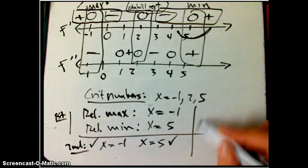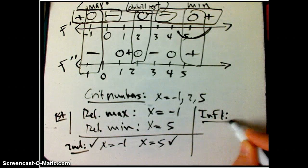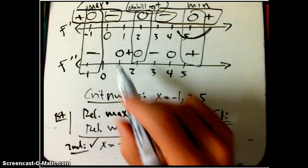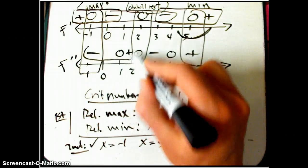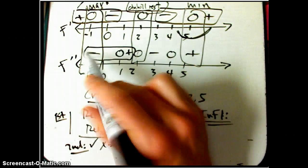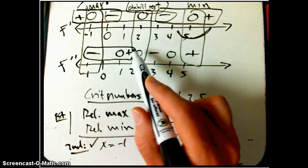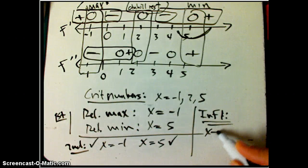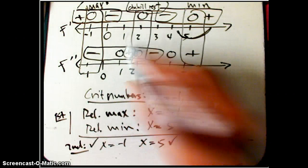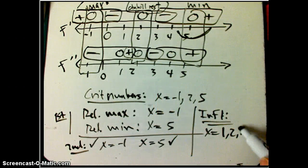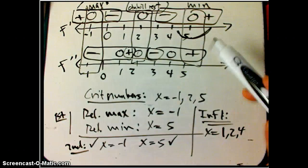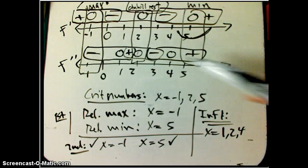And then what about inflection points? Those are going to be sign changes for the second derivative. Minus zero plus. Remember, don't just look for zeros. Look for a sign change. Minus zero plus, yep. So we're going to get x equals one. And plus zero minus, yep. X equals two. And minus zero plus, x equals four. I happen not to put in any tricky ones where it doesn't actually change sign, but that can happen.